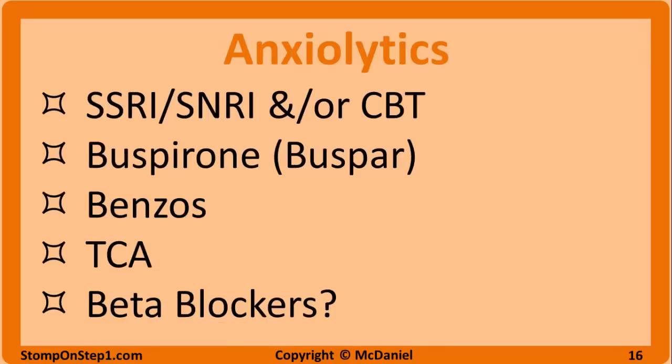Next up are anxiolytics, a group of medications that relieve or abort anxiety. SSRIs and SNRIs are considered first-line pharmacologic treatment for generalized anxiety and panic disorder. We discussed these medications in depth in the previous video on antidepressants, and most of them do have anxiolytic properties. The main difference is that higher doses are usually needed to treat anxiety than depression. Cognitive behavioral therapy has similar efficacy to SSRIs and SNRIs and is also a first-line treatment. The best option may be a combination of an antidepressant with CBT. The downside to both first-line options is that they take about a month to start working.